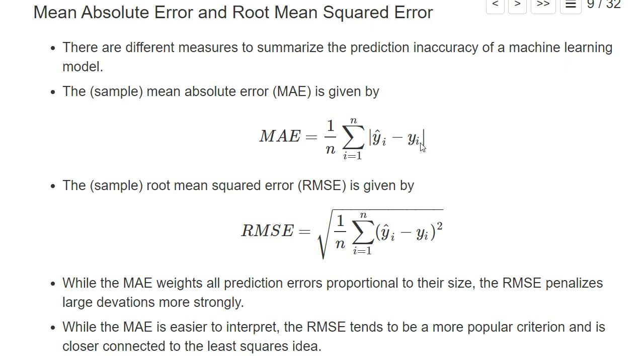Taking the absolute value means all positive or negative differences get the same weight, and then we sum this up over all observations and divide by n to take the mean of this difference.